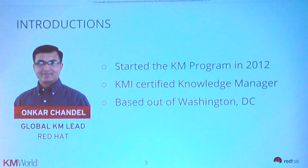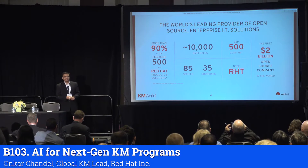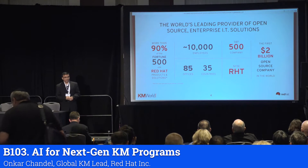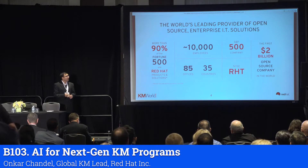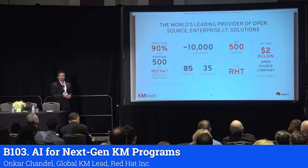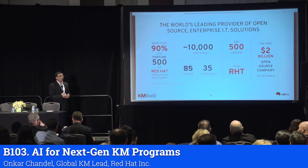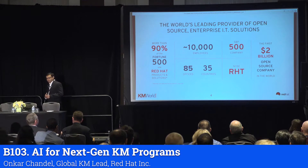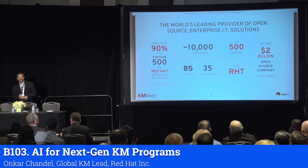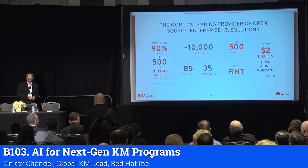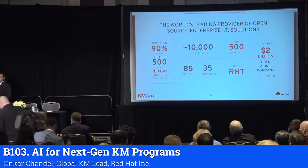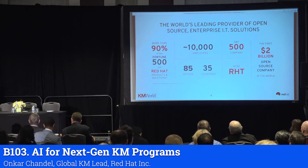I am from Red Hat. Red Hat is the open source leader. We sell free software, and still we make around $2.9 billion per year. 450 out of 500 Fortune 500 companies use our software. We are in cloud software, operating systems, mobile software, middleware, et cetera. All of our software is related to enterprise systems, and we are a global company.